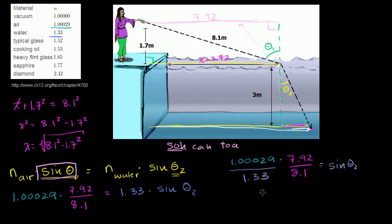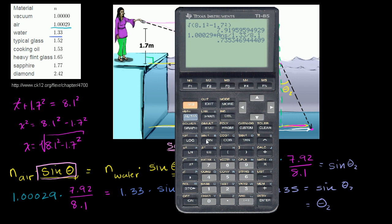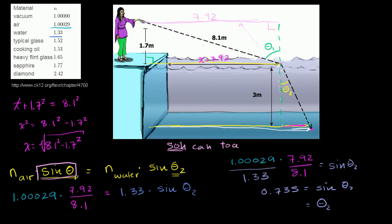So 0.735 = sin(θ2). Now we take the inverse sine of both sides to solve for θ2. Taking the inverse sine of 0.735, we get θ2 ≈ 47.34 degrees. So we were able to figure out the refraction angle: 47.34 degrees.